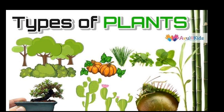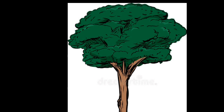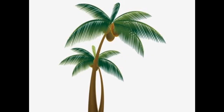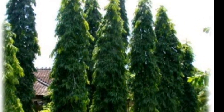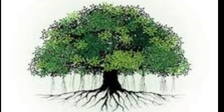Number one: Trees. Tall and big plants are known as trees. Some trees grow tall and straight — for example, coconut and Ashoka tree. Some trees are very broad and have many branches — for example, mango and banyan tree.